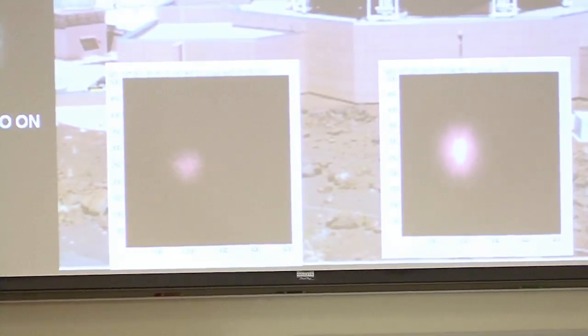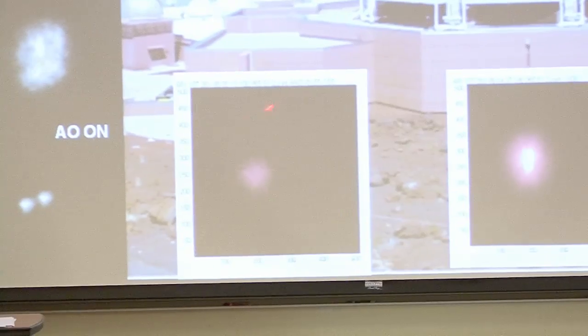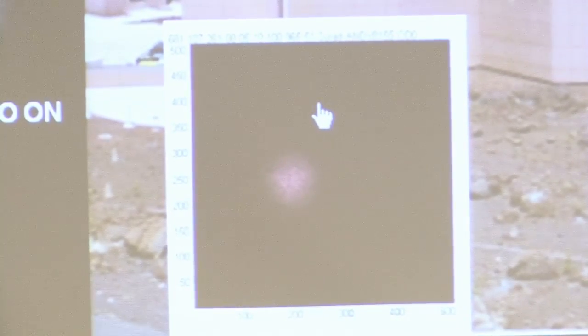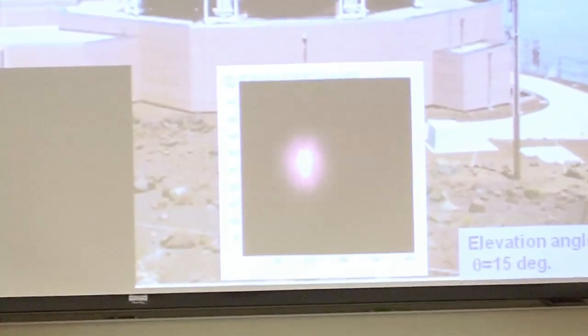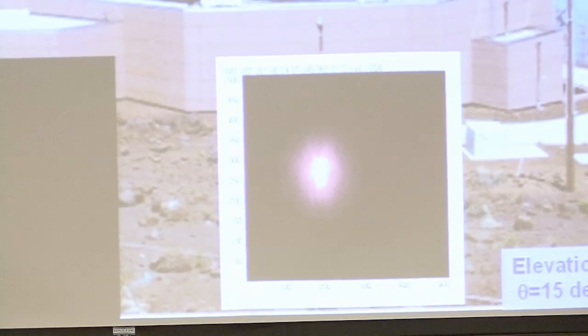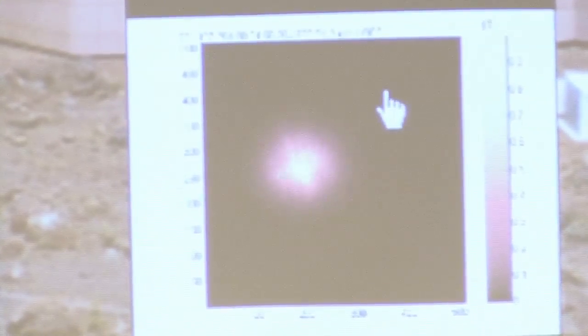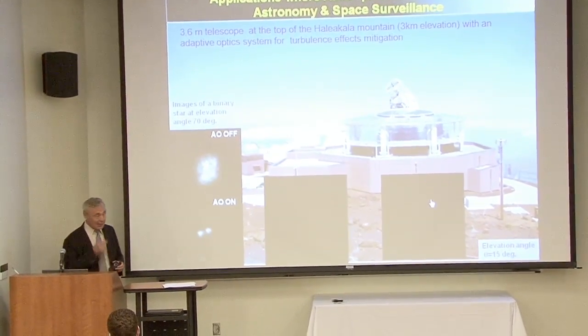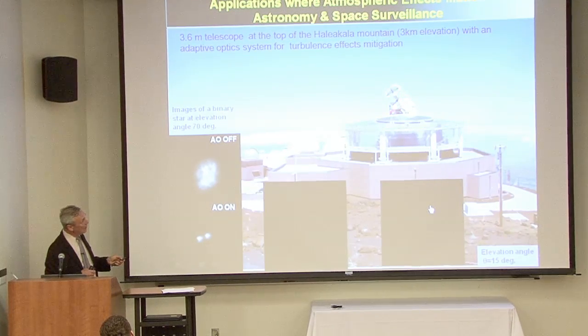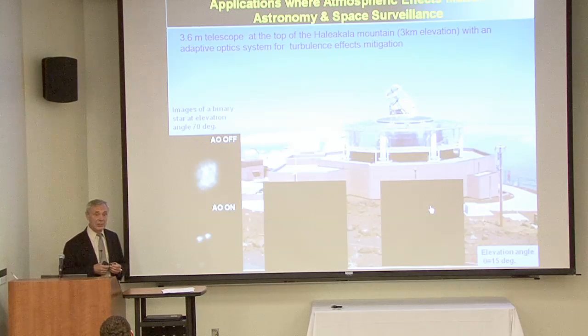Let me show you a couple of movies. One movie we took a couple years ago: we picked up a star close to 90-degree elevation, and you see in the middle of the movie how the quality of the star image changes using adaptive optics. The system is off, and now it is on — a perfect compensation of atmospheric turbulence. But if you point the telescope at low elevation and pick up the same star and do exactly the same experiment, you see that in the middle we turn on adaptive optics and it is working — but less effectively.